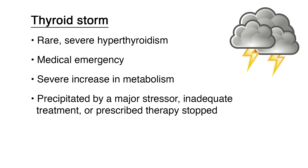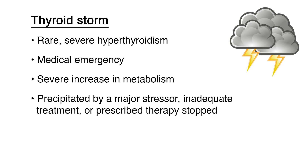Thyroid storm is a medical emergency manifested by a severe increase in metabolism, usually precipitated by a major stressor such as infection, trauma, or surgery. It can also occur when a patient is inadequately treated or stops taking prescribed therapy. Signs and symptoms include elevated temperature, increased tachycardia or onset of dysrhythmias, elevated blood pressure, worsening tremors and restlessness, worsening mental status, delirious or psychotic state, or coma.